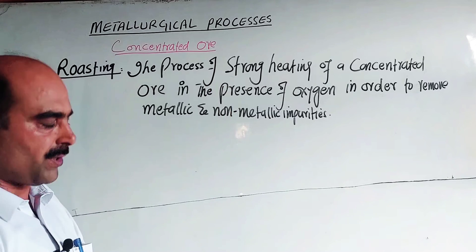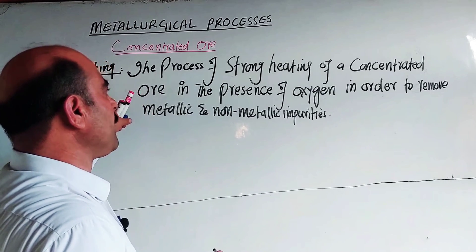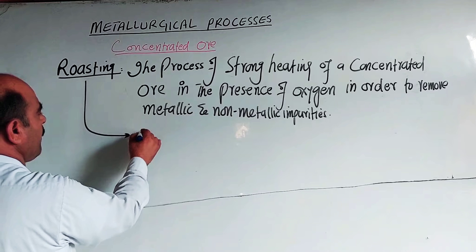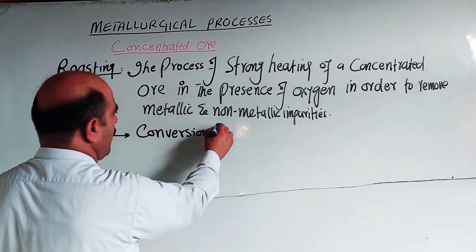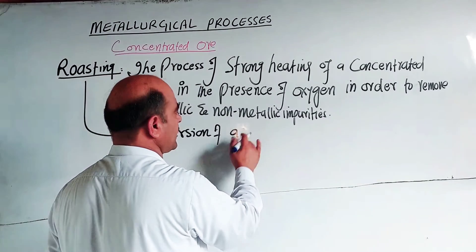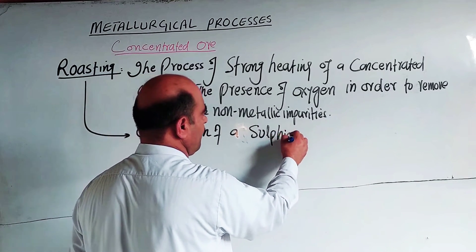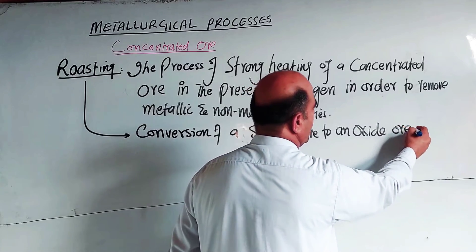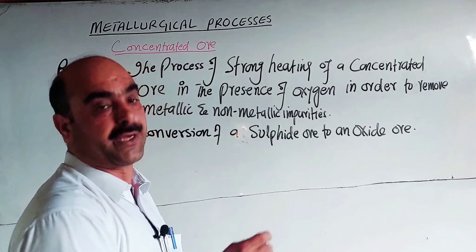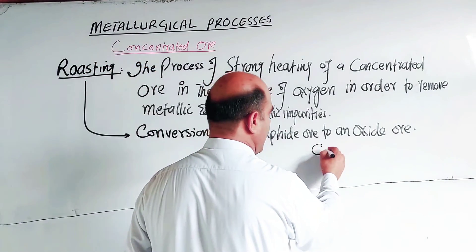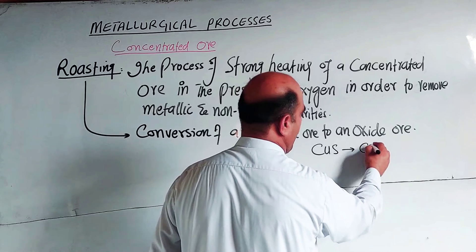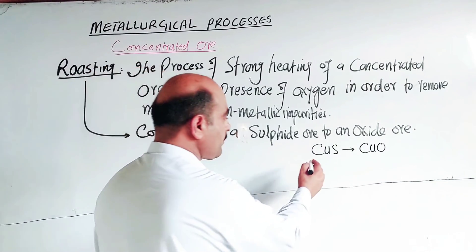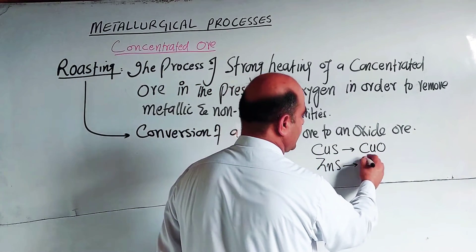The roasting process is used for the conversion of a sulfide ore to an oxide ore. We need to convert the sulfide ore to oxide ore so that the subsequent reduction process can be carried out. For example, copper sulfide (CuS) is converted to copper oxide (CuO), and zinc sulfide (ZnS) is converted to zinc oxide (ZnO) by roasting.